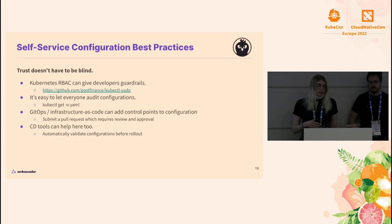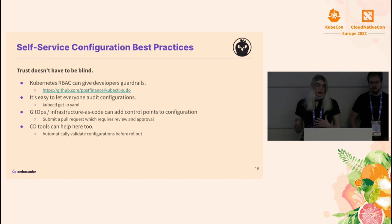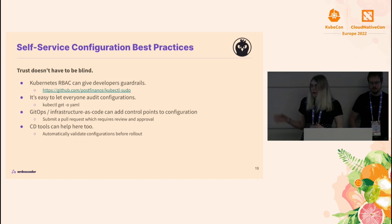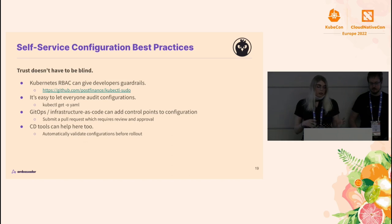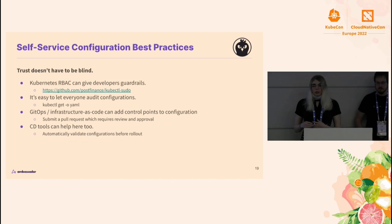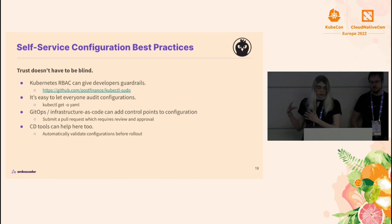The trust between teams doesn't have to be blind, and you don't have to give everyone total access to your cluster. You can use Kubernetes RBAC to set up permissions for who is allowed to use what resources, apply resources, and configure things. In particular, we're a big fan of a tool called kubectl sudo, which lets you set up permissions for who is allowed to use elevated permissions in the cluster. That makes it easy for everyone to look at the config in the cluster, but you can limit who's allowed to make changes without limiting who can inspect things, get logs, and see the status of all resources.